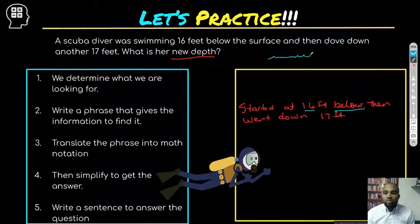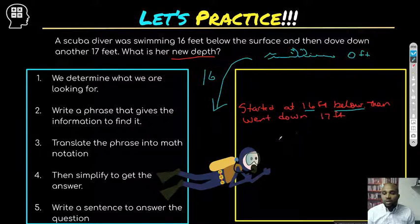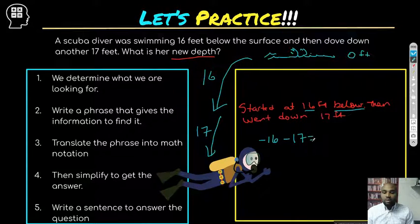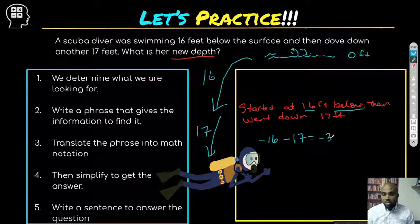Translate to math notation: if we picture the water surface as zero feet, then 16 feet below is negative 16. The diver then went down another 17 feet — going down means subtracting more, keeping things negative. So we have negative 16 plus negative 17, which means we're adding the magnitudes: 16 plus 17 equals 33, making it negative 33. Now simplify — that's negative 33.